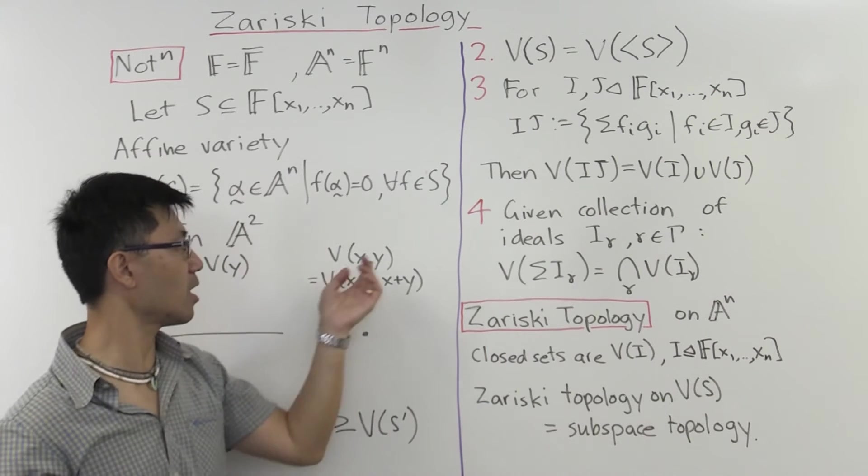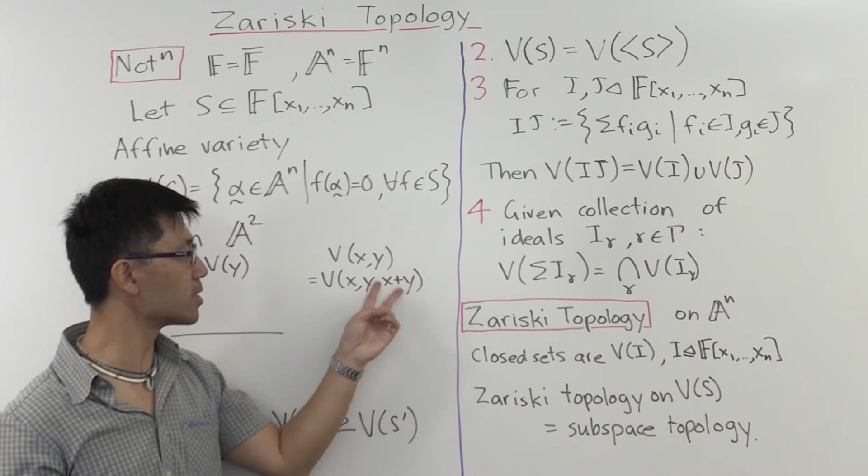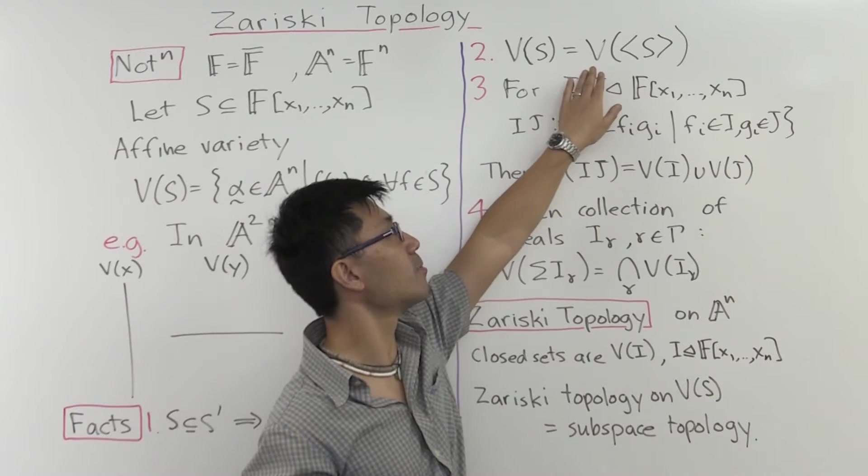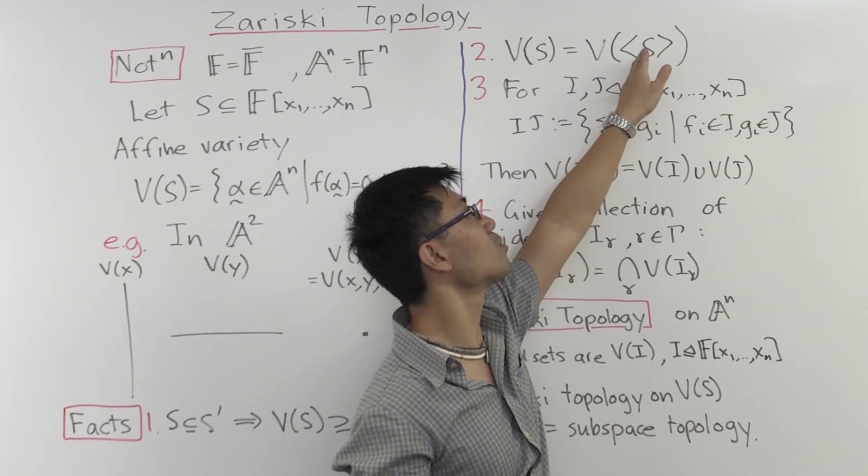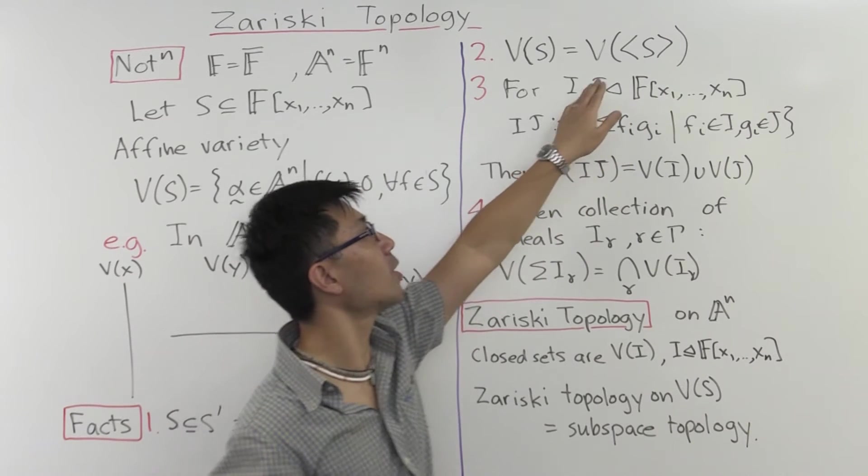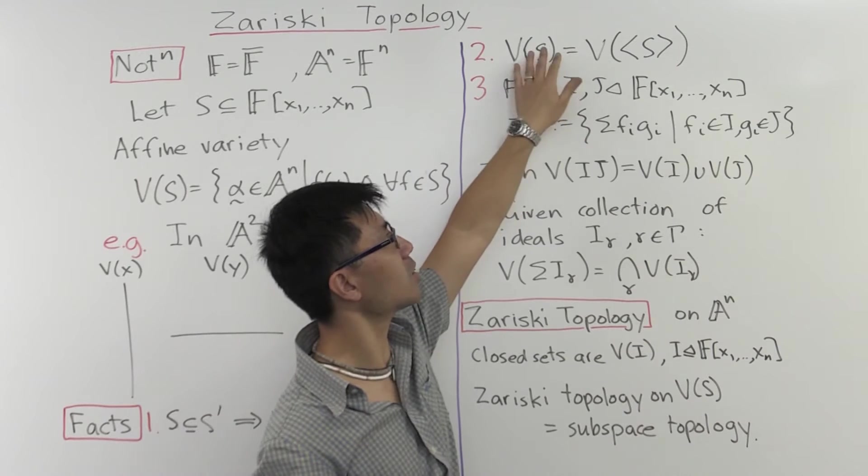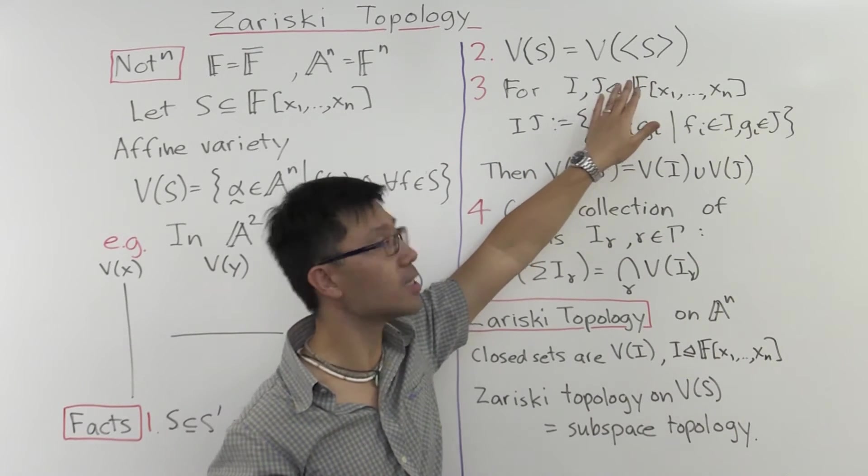Because basically, if you have two functions and you look at the zeros of that, the sum will also be zero there. And similarly, you can show that if you scale and multiply by a polynomial, it doesn't increase your conditions. So that's why you have this equality here. What else is rather nice about this is that, well, this set S can be infinite.